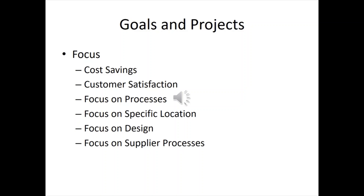Six Sigma is usually divided into a project, and it focuses on saving money and improving customer satisfaction. The idea is that if you get a robust process, the product or service will naturally come out of it in good shape. It focuses on very specific locations — even little cells within a plant or office. And design is where you get the most bang for the buck: a good design fixes 90% of the battle. It's also focused on supplier processes — suppliers have to deliver good product too.